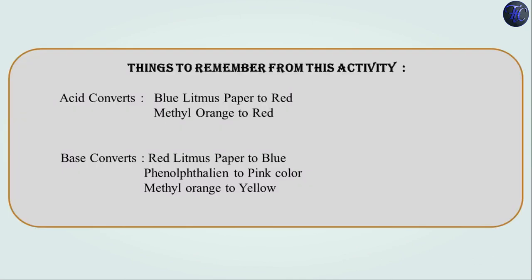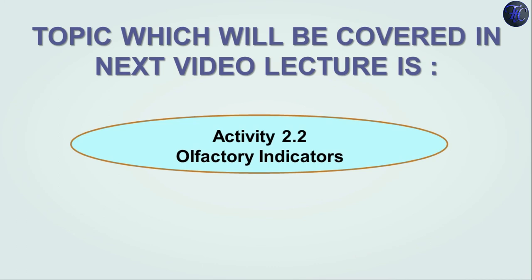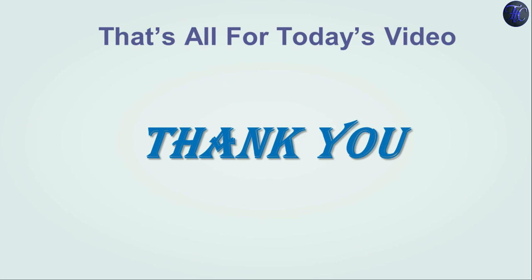Things to remember from this activity — and my advice is that you should note down this activity because this is our key learning. Acid converts blue litmus paper to red and methyl orange to red. Base converts red litmus paper to blue, phenolphthalein to pink, and methyl orange to yellow. The topic covered in the next video lecture is Activity 2.2, that is olfactory indicators, where we will learn what olfactory indicators are and how odor changes in acid and base. That's all for today's video lecture. Thank you.